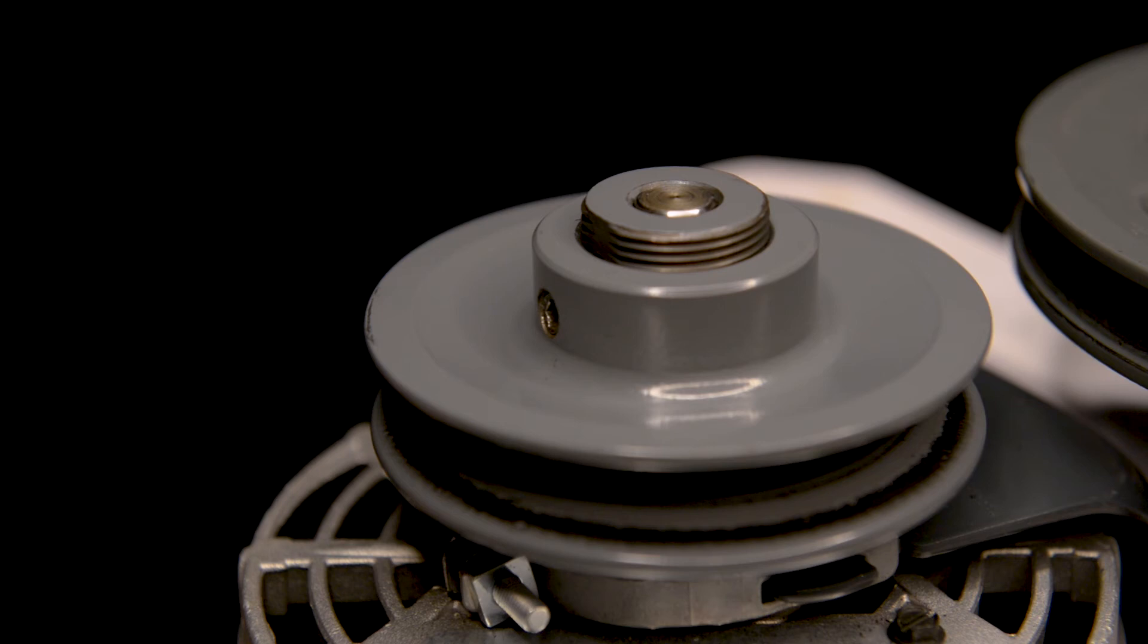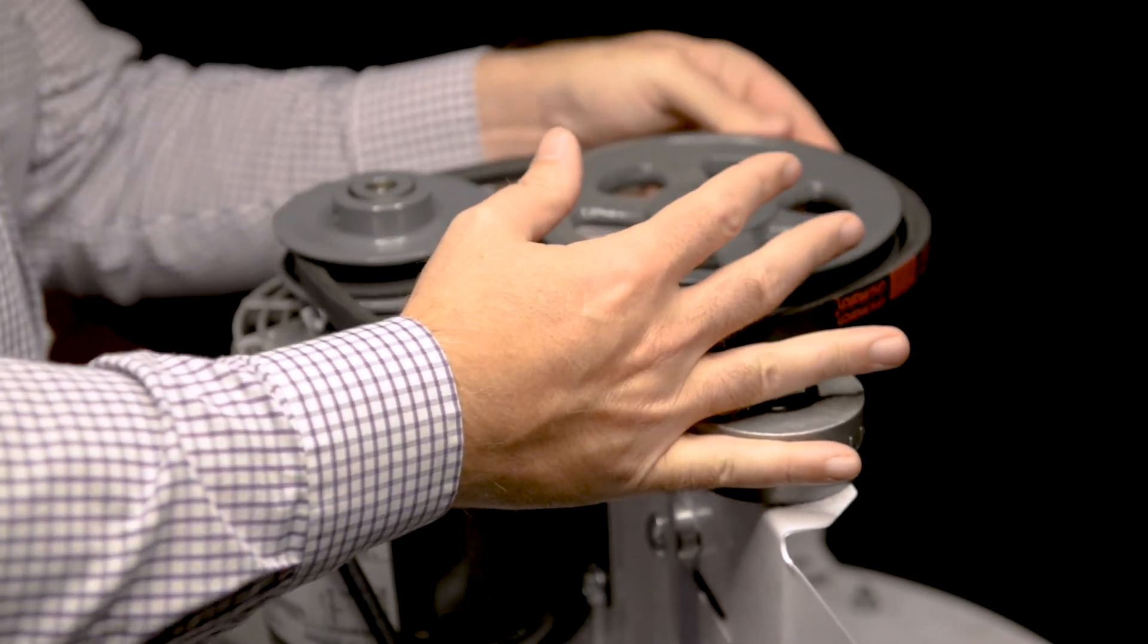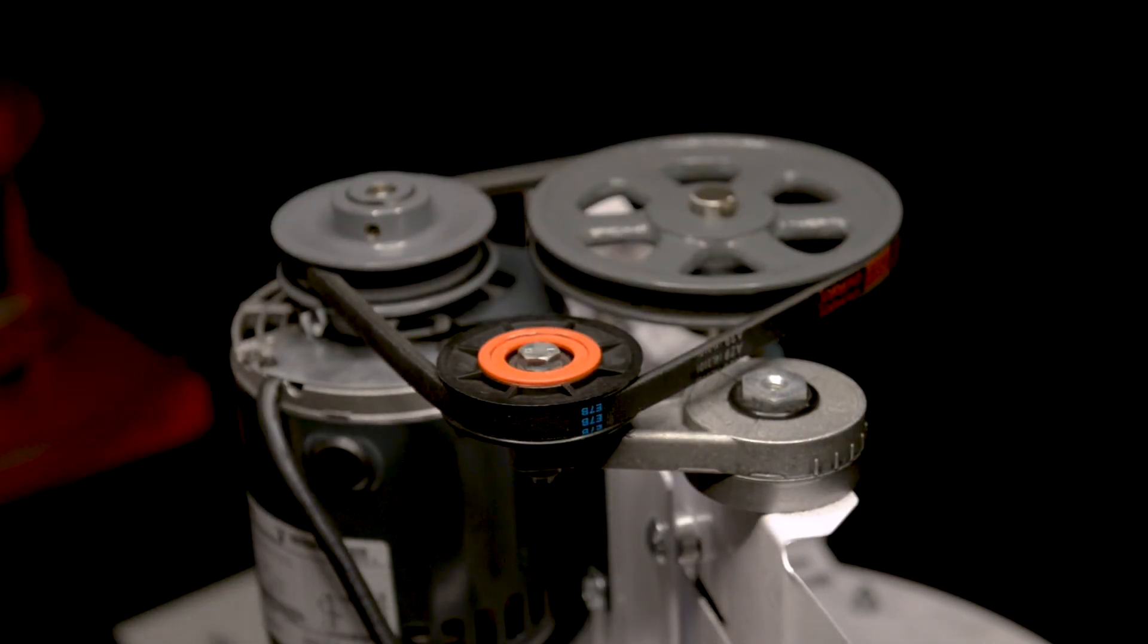Once this is completed, reinstall the belt. First position the belt on the belt tensioner, apply pressure to the tensioner, and slip the belt over the fan and motor pulleys. Before running the unit we must check belt alignment.